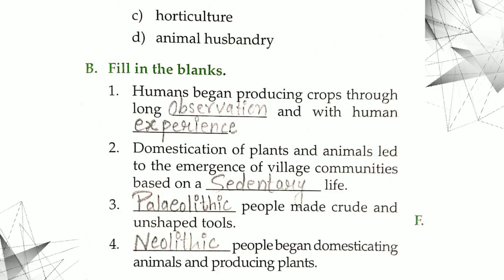Next is dash people made crude and unshaped tools. Crude and unshaped tools were used during Paleolithic age, P-A-L-A-E-O-L-I-T-H-I-C, Paleolithic. Paleolithic people made crude and unshaped tools.